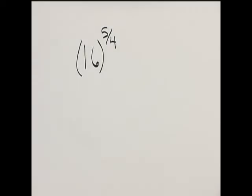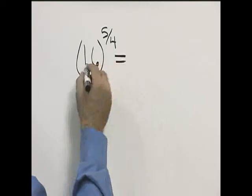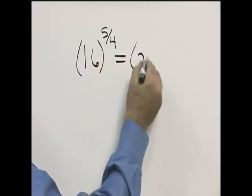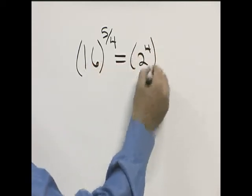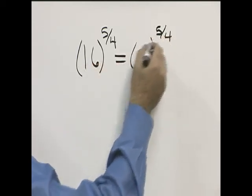Let's evaluate 16 raised to the 5 fourths. So let's rewrite 16. 16 is the same as 2 to the fourth, raised to the 5 fourths.